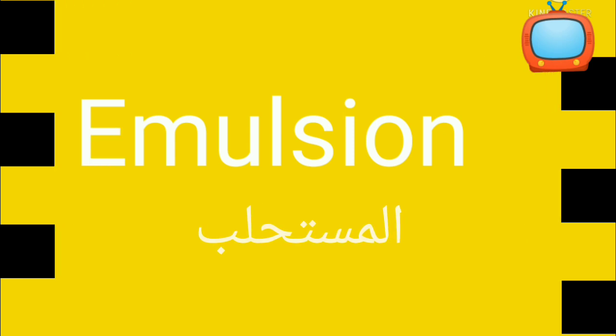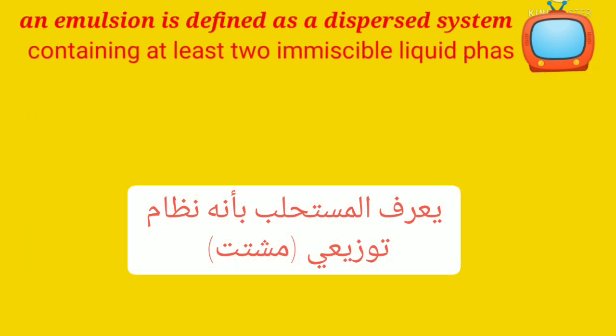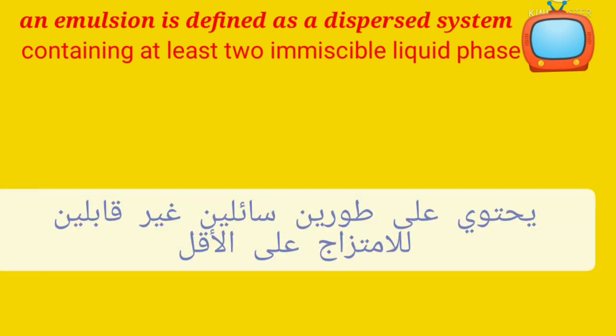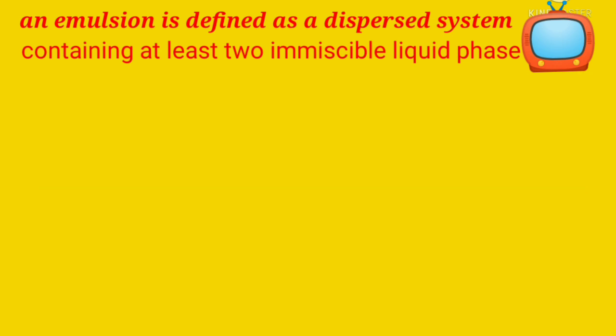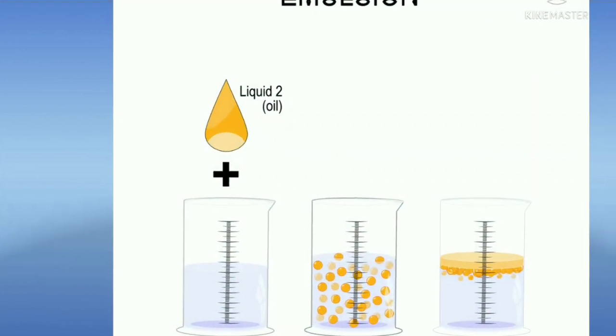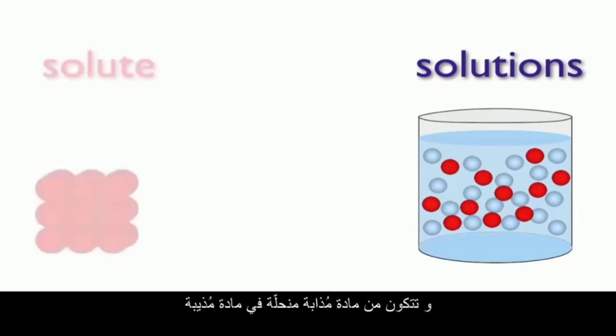An emulsion is defined as a mixture containing at least two immiscible liquid phases. We have learned about solutions as a mixture of two or more substances in the same phase, made up of a solute dissolved in a solvent.